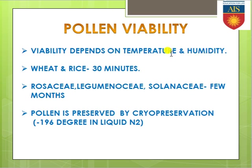Pollen viability always depends on temperature and humidity. If in any environment the temperature is very high or very low, or if humidity is very high or the weather is very dry, the pollen viability cannot be maintained properly. Optimum temperature and optimum humidity — intermediate temperature and intermediate humidity — are always required for maintaining the viability of the pollen grain.